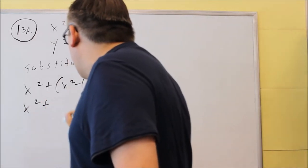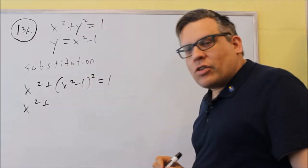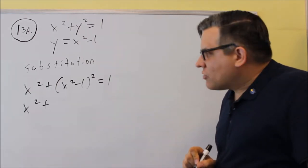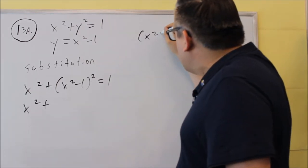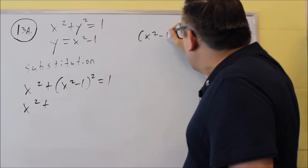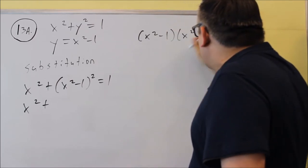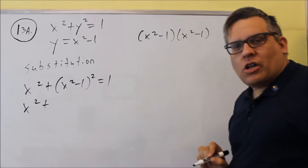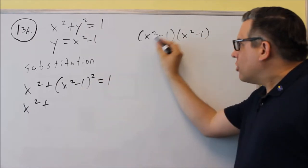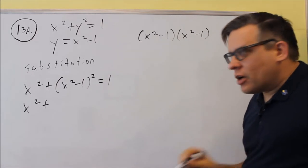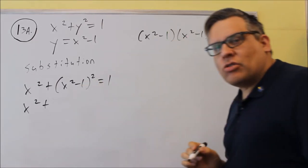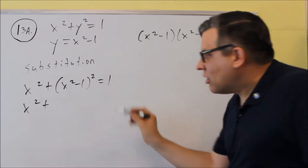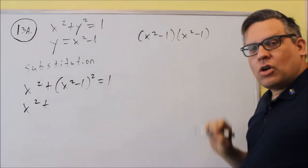So I'm going to expand x squared plus (x squared minus 1) squared. That means you're doing x squared minus 1 times x squared minus 1 — you have to FOIL it. Don't just square each term individually, because otherwise you'll miss the middle term and get it wrong. Make sure you do the full work.